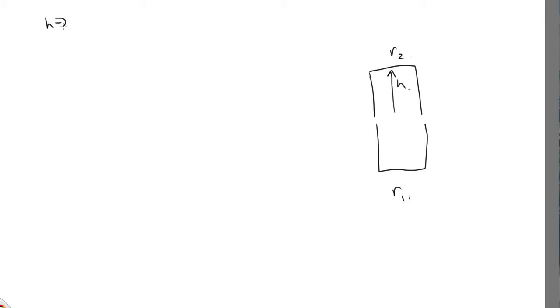If we move h up to a height h plus delta h, then the path length r2 becomes, OK, initially it was r1. Now it has to go up the extra delta h here and down the extra delta h here. And so the path length is r1 plus 2 delta h.